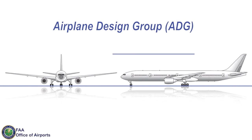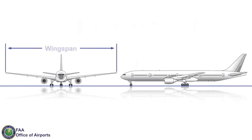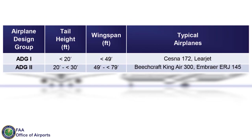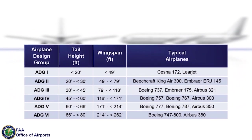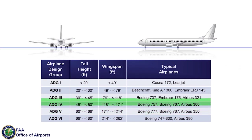ADGs are groupings of similar sized aircraft based on tail height and aircraft wingspan, with each ADG defined by ranges for these two dimensions as shown. As an example, ADG-5 includes aircraft with a tail height between 60 and 66 feet and wingspans between 171 and 214 feet, while ADG-3 includes aircraft with a tail height between 30 and 45 feet and wingspans between 79 and 118 feet.